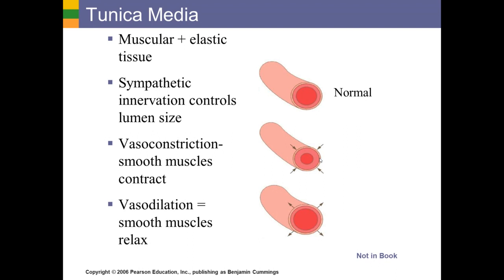That greater amount of smooth muscle allows for vasoconstriction and vasodilation. When those smooth muscles contract, that causes vasoconstriction — the lumen gets smaller. Imagine people holding hands in a circle: if you bring your arms in close to your body, everyone steps forward and the circle gets smaller. When smooth muscles relax, the circle gets bigger — that's vasodilation. Because arteries have a much thicker layer of smooth muscle compared to veins, they have a much greater capacity to change their size via vasoconstriction or vasodilation.